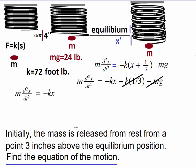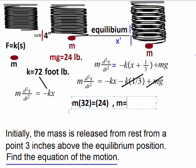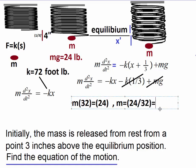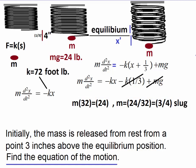Now let's fill in the values. We have K equals 72. For mass m, we use m times g equals 24, where g equals 32 feet per second squared. So m equals 24 divided by 32, which simplifies to three-quarters. In the foot-pound-second system, the unit of mass is called a slug. Our differential equation governing this motion is now ready to be written out.